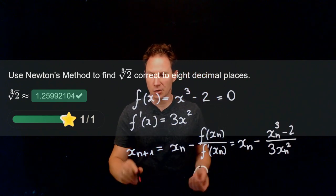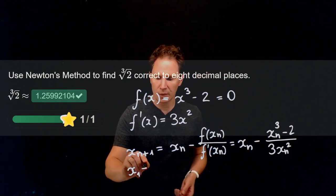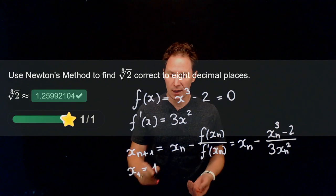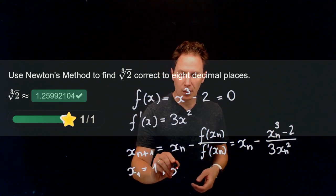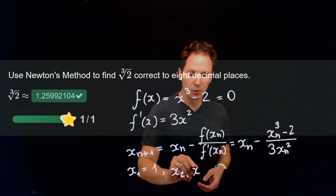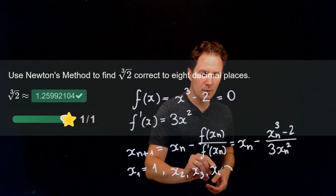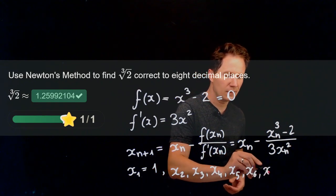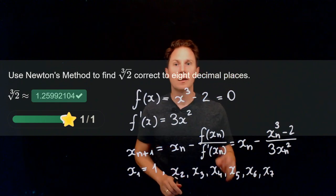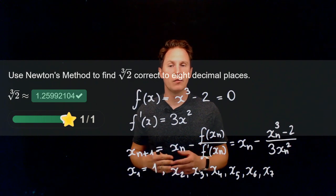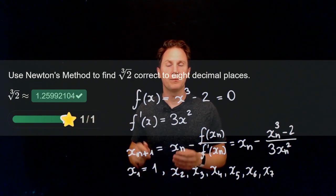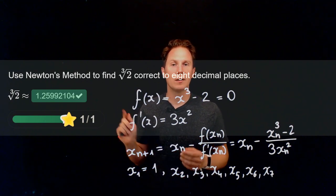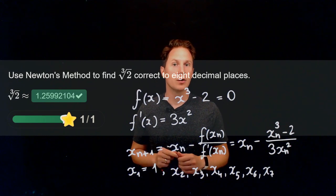And then all we need is an initial guess for the cube root of two, and I will go with the really bad guess of x₁ = 1. And then if you calculate the consecutive terms in the approximation, you will get a sequence of numbers, and it is at the sixth and seventh term that you will notice that the decimals in the first eight places will not change anymore. So those are the correct decimals for the cube root of two.